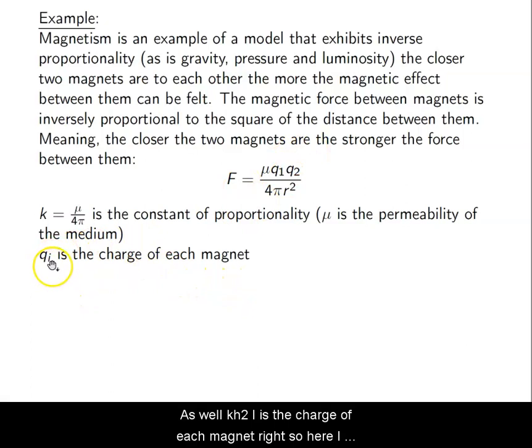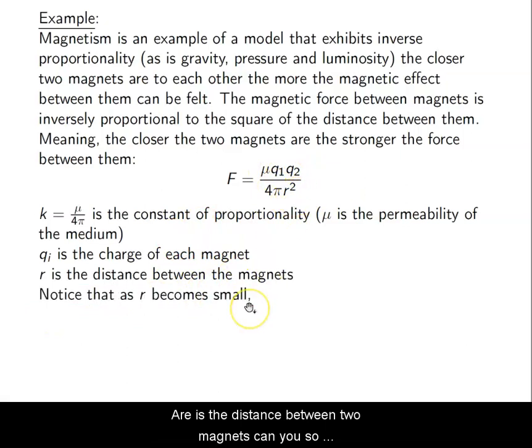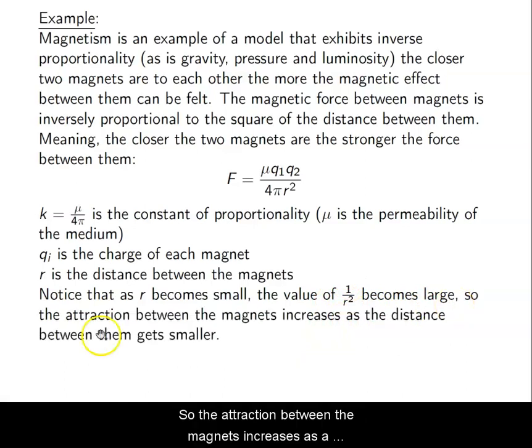Each qi is the charge of each magnet. So here i can be 1 or i can be 2. It's just saying that for any randomly picked magnet that you have. r is the distance between the magnets. So notice that as r becomes small, the value of f becomes very, very large. The value of 1 over r squared becomes large. And it grows very quickly because it's 1 over an exponential term.